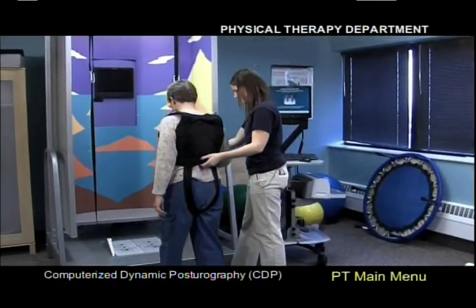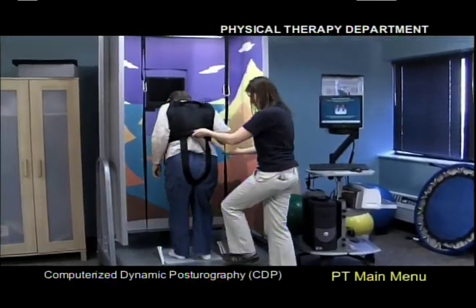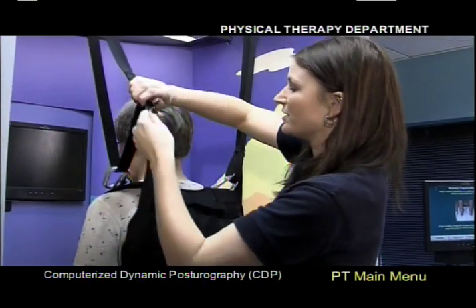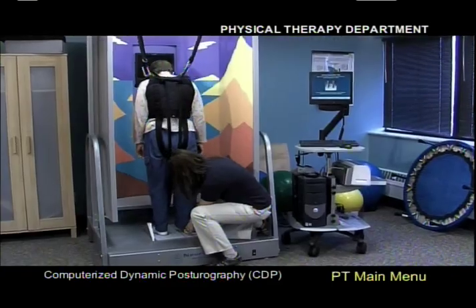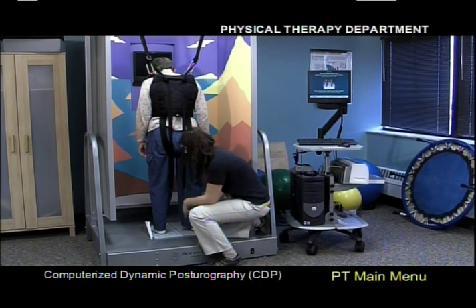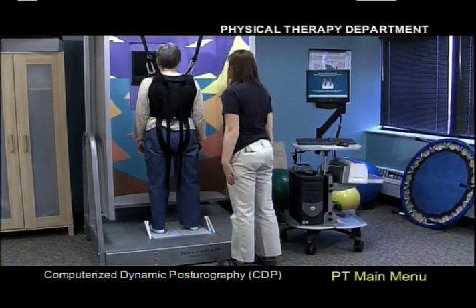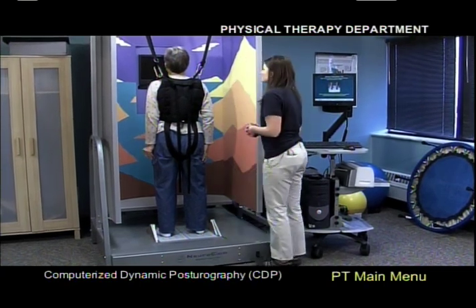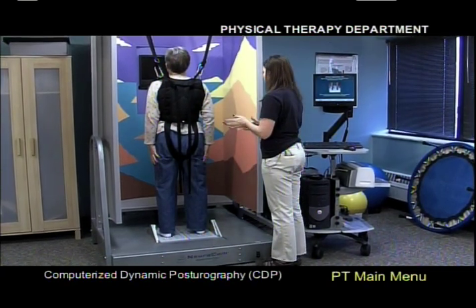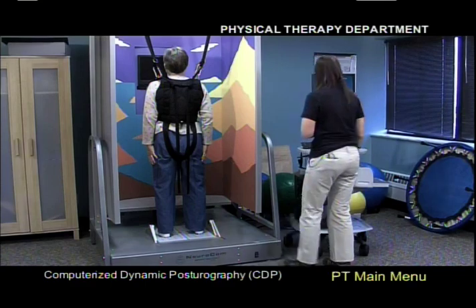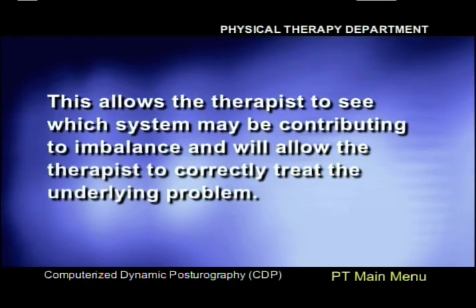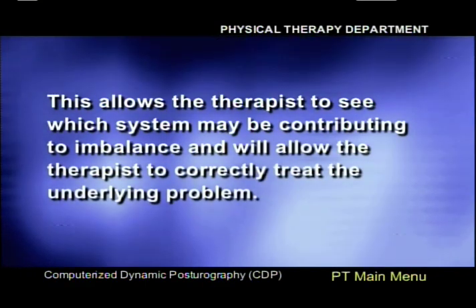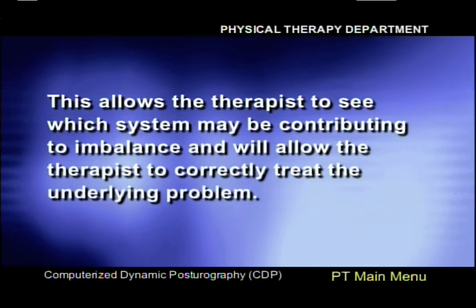In the sensory organization test, there are six different conditions in which the therapist will perform two to three trials of each condition. For two of the conditions, the patient is asked to close their eyes while maintaining balance. This test simultaneously evaluates the three sensory systems that contribute to balance, allowing the therapist to see which system may be contributing to imbalance and to correctly treat the underlying problem.